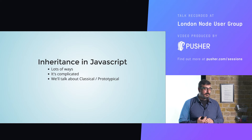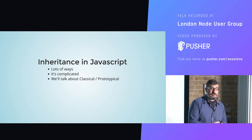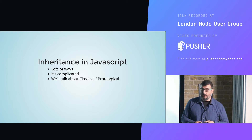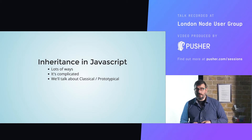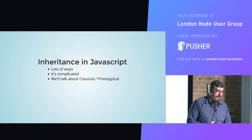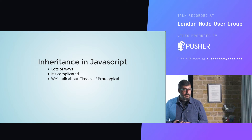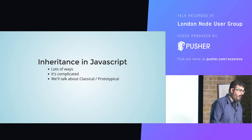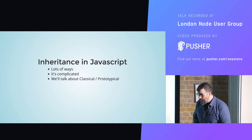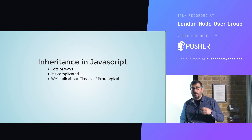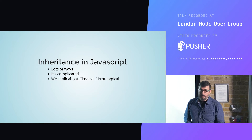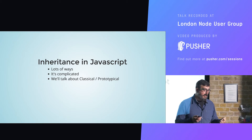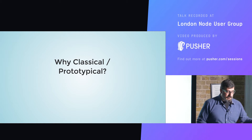Let's get started. Today we're going to talk about inheritance in JavaScript. There are lots of ways to do inheritance — it's a very battled issue in JavaScript and it can be complicated. Today we'll talk about the classical prototypical inheritance, which you may also hear referred to as pseudo-classical. We're going to focus specifically on how inheritance works, rather than comparing different ways to do it.